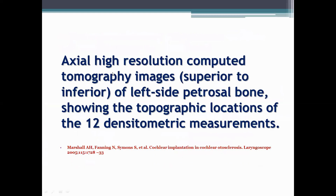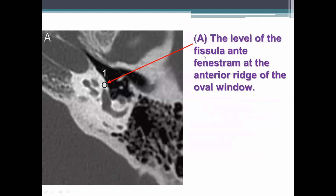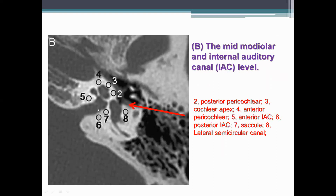These are axial high resolution computed tomographic images from superior to inferior of the left side of the petrosal bone, showing the topographic location of 12 densitometric measurements. At the level of the fissula ante fenestram, area 1 is at the anterior reach of the oval window. The second area of interest is the mid-modiolar and internal auditory canal level: area 2 is the posterior pericochlear region, area 3 is the cochlear apex, area 4 is the anterior pericochlear area, area 5 is the anterior part of the internal auditory canal, area 6 is the posterior part of the internal auditory canal, area 7 is the saccular area, and area 8 is the lateral semicircular canal area. These areas must be examined for foci of otosclerosis.